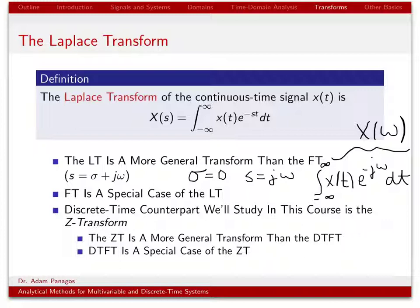We're going to have something similar in this class: another more general transform called the Z transform. Just as the Laplace transform is more general than the Fourier transform — and the Fourier transform can be obtained from the Laplace transform — the same thing happens for the Z transform. The Z transform is more general than the discrete time Fourier transform, and we can obtain the discrete time Fourier transform from the Z transform by evaluating it at a certain point in the complex plane. The Z transform is completely analogous to the continuous time Laplace transform, but for discrete time signals.